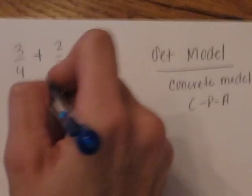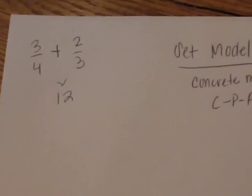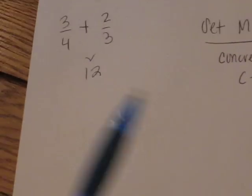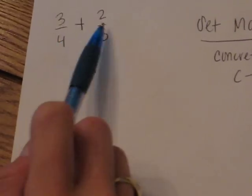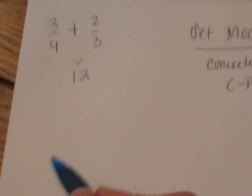What I mean is, you and I both know that the common denominator is twelve, but the power in this model is that they don't necessarily have to grasp that yet to do this model. All they need to know is that they're going to use their denominators to create a four by three model.